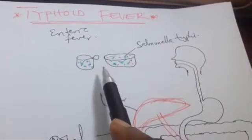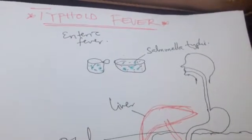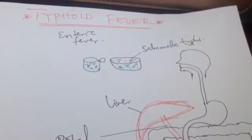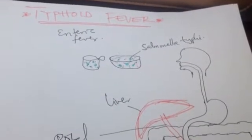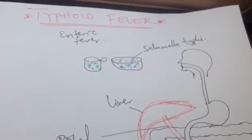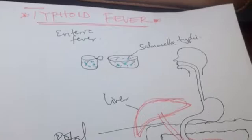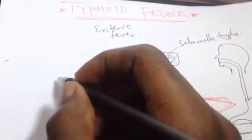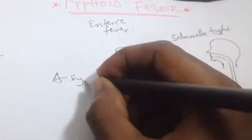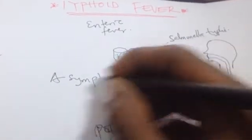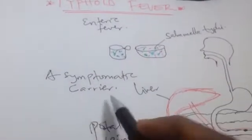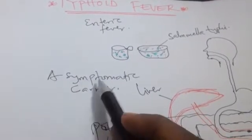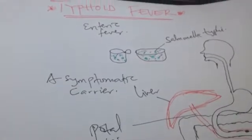How does the bacteria get into our food? For example, a person who had typhoid fever months ago may have been treated and recovered, but is still carrying the bacteria in his body without symptoms. This is called an asymptomatic carrier. He has been treated, he is well, but he still has the bacteria in his body.